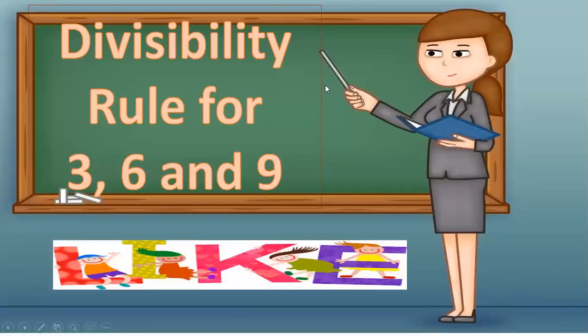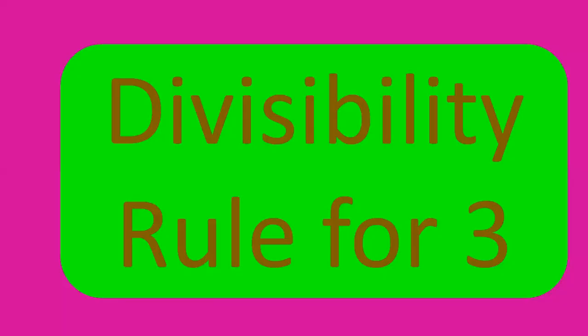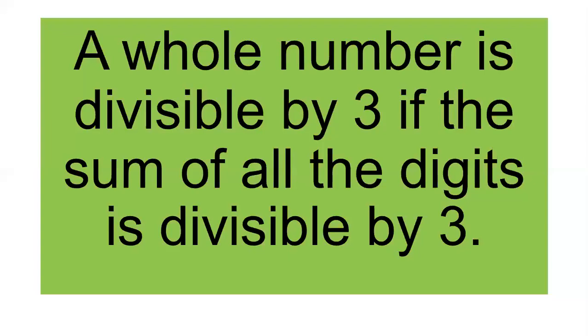Hi guys! Welcome back to my YouTube channel. For today's video, we tackle the divisibility rules for 3, 6, and 9. First rule: divisibility rule for 3. A whole number is divisible by 3 if the sum of all the digits is divisible by 3.